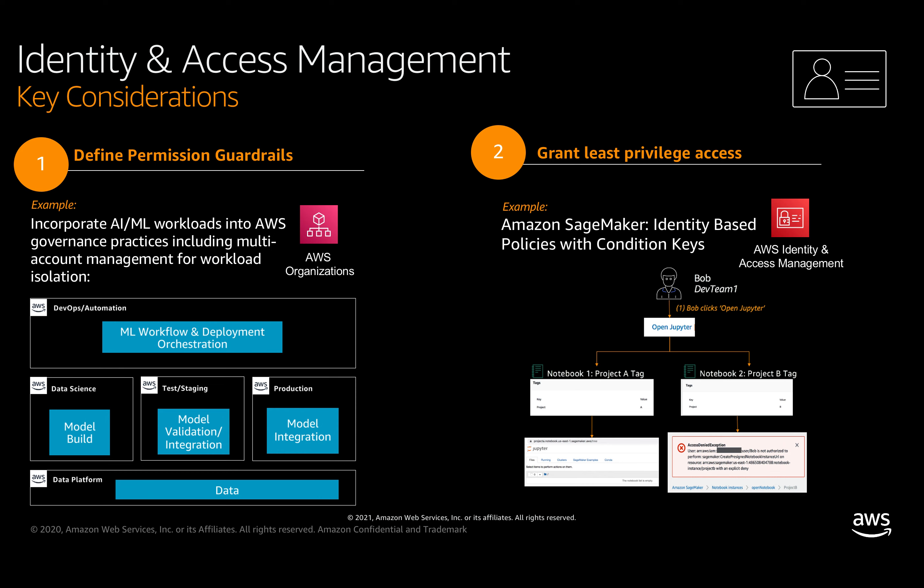Now let's move on to granting least privilege access using an example with Amazon SageMaker and AWS Identity and Access Management. SageMaker provides several mechanisms for configuring fine-grained policies limiting access to specific resources under specific conditions. We have a service-specific resource — a notebook instance — and service-specific actions that allow or deny access to an API operation or CLI command. In this case, the action is 'create pre-signed notebook instance URI,' and we can additionally add condition keys to further refine when the policy applies. Here, Bob only has access to notebooks that are part of Project B.